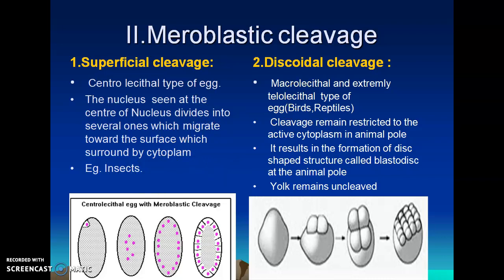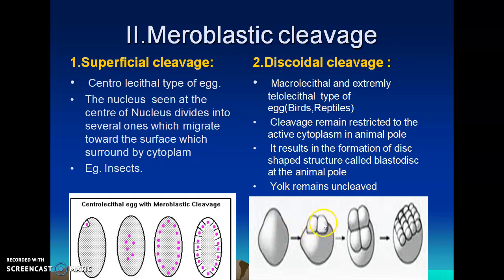Discoidal cleavage is generally exhibited by extremely telolecithal types of egg, where the yolk is concentrated throughout most of the egg including much of the animal pole. This is found in heavily yolked macrolecithal eggs of birds and reptiles. The cleavage remains restricted only at the active part of the cytoplasm, and the remaining portion is undivided, resulting in the formation of a blastoderm. This blastoderm has the appearance of a disc-shaped structure, and hence it is called discoidal cleavage.